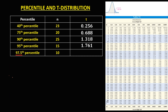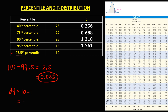For this 97.5 percentile, we have 100 minus 97.5 equals 2.5. Then to convert this one to decimal, that's 0.025. This is now the area to the right of this 97.5 percentile. For the degrees of freedom, that's 10 minus 1, so the degrees of freedom is 9. With 0.025 and degrees of freedom 9, therefore the t-value is 2.262.